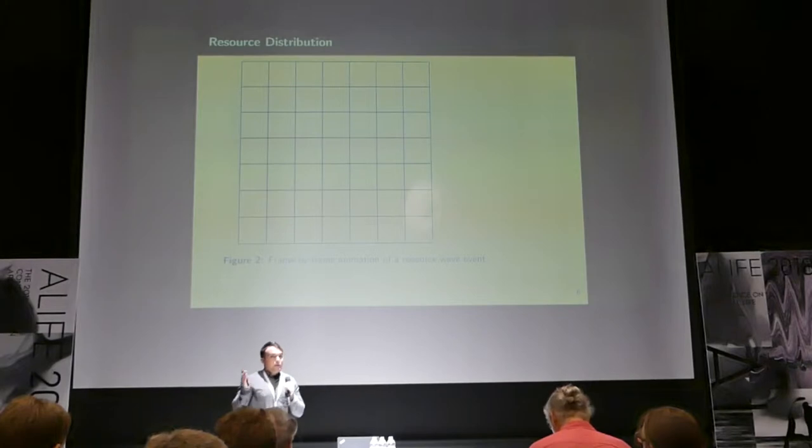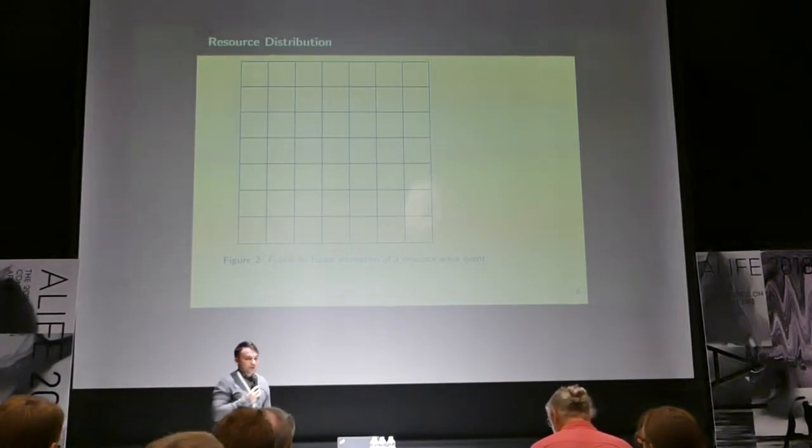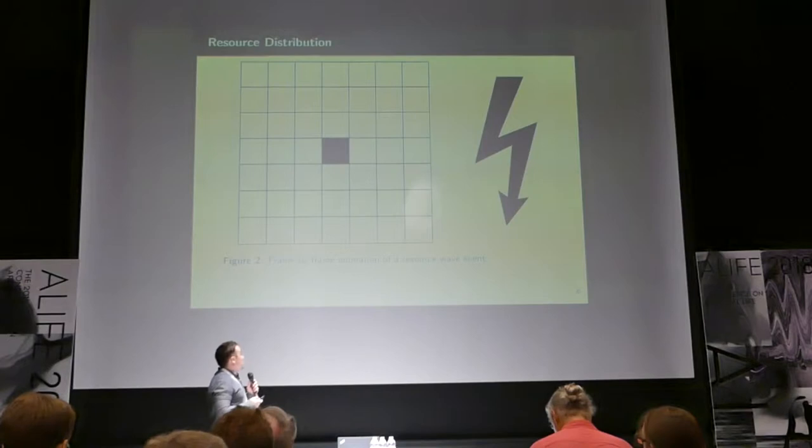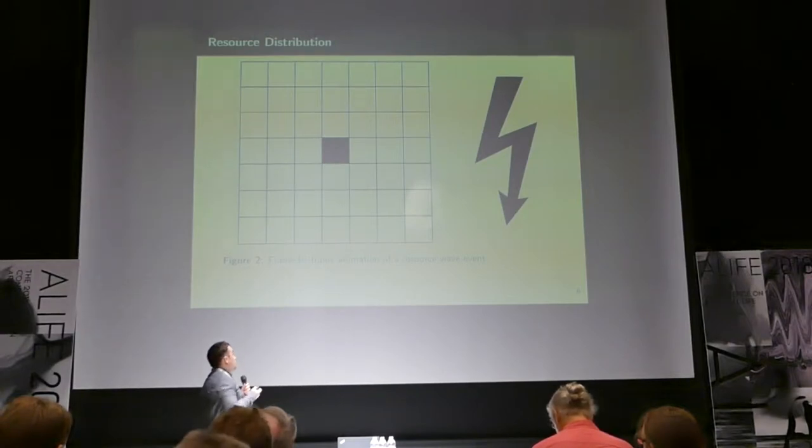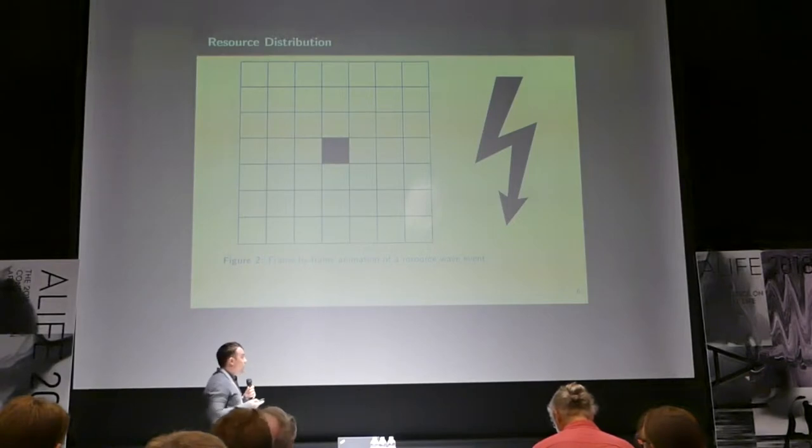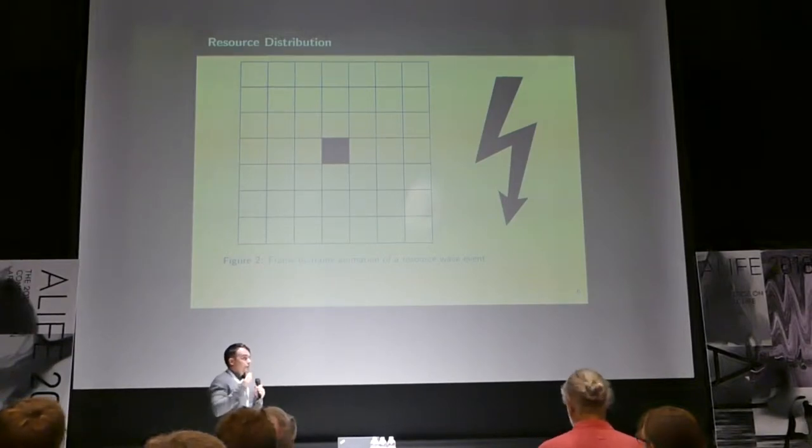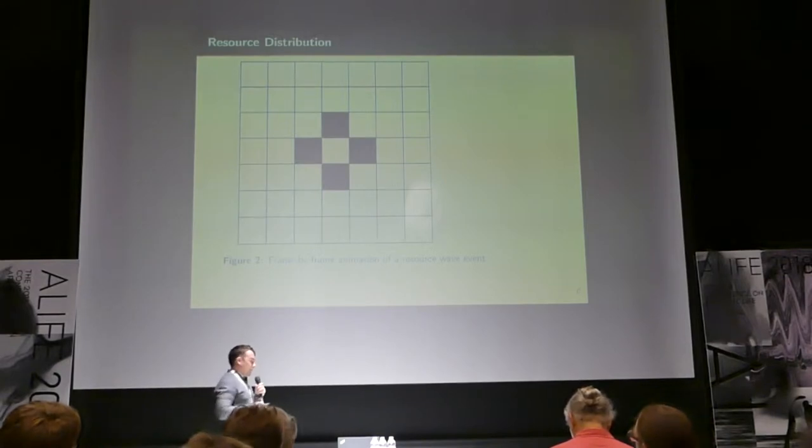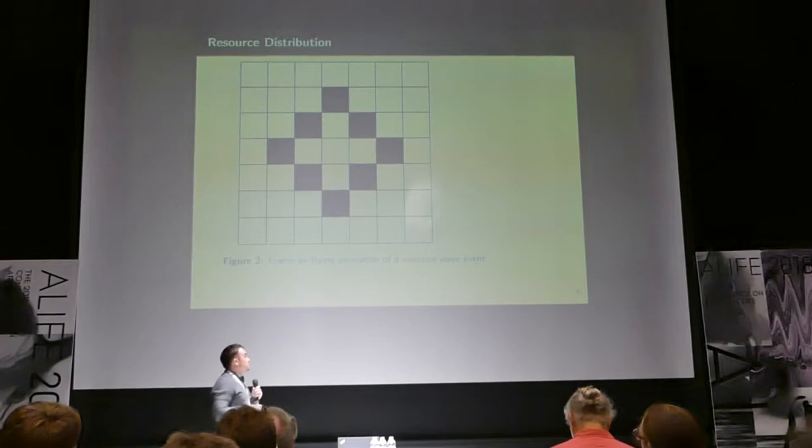Now we're going to start at kind of an arbitrary point and build up the model. So, stay with me. The foundation of our model is how we're distributing resources. We have a toroidal grid and we distribute resources in these, we call them resource wave events, where a resource wave is seeded at a single toroidal grid title and then propagates outwards for a time until it ceases.